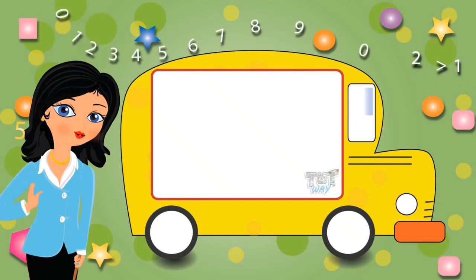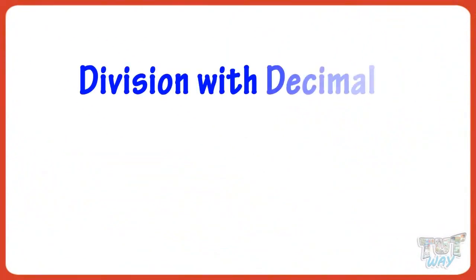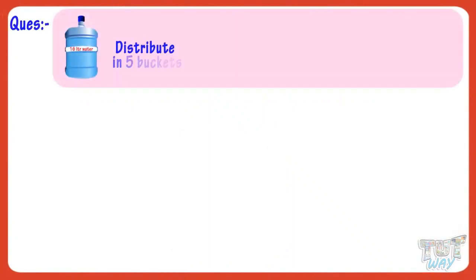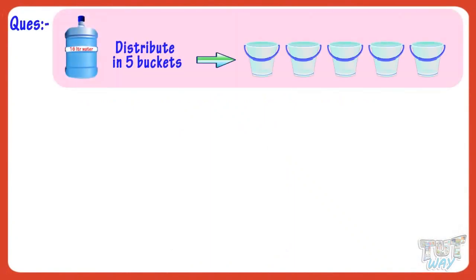Hi kids! Today we will learn division where we find quotient in decimals. So let's start. We distributed 16 liters of water equally in 5 buckets. How much water will be there in each bucket?